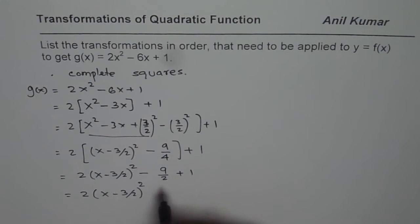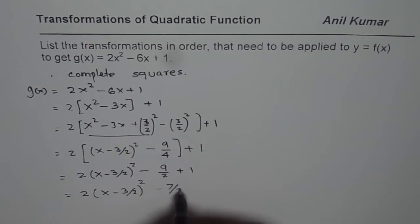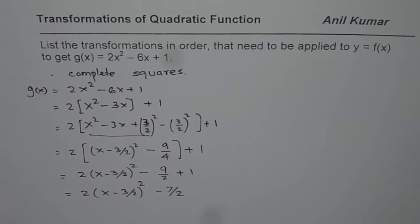So you get 2 times x minus 3 over 2 whole square. When you take minus 2 from it, you get minus 7 over 2. That is how you can complete the squares.